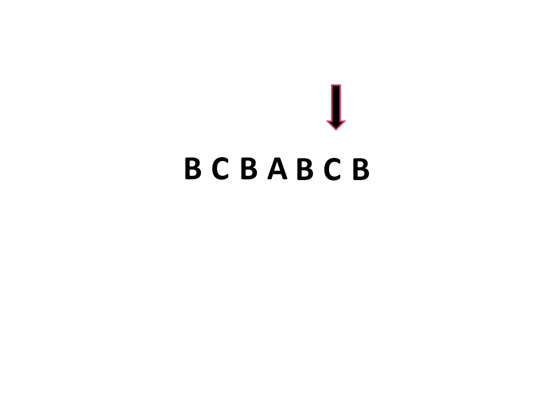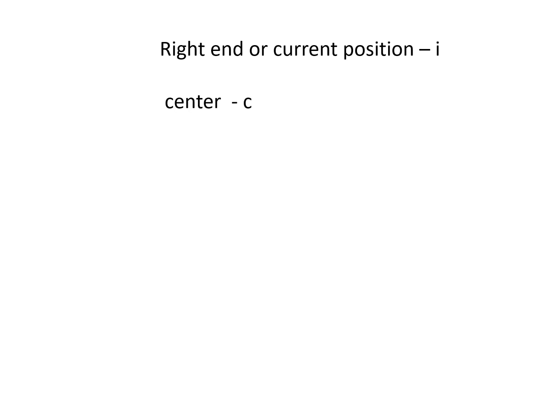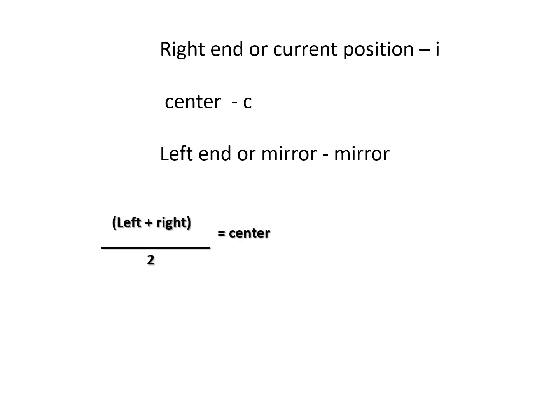To find the mirror position of the current character, we already know the center of the longest palindrome (C) and the current position (i). Using the formula: left + right divided by 2 equals center, we derive mirror = 2 × C − i. Using this formula, we can get the value of the mirror for any current element.